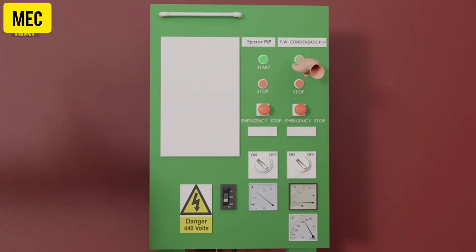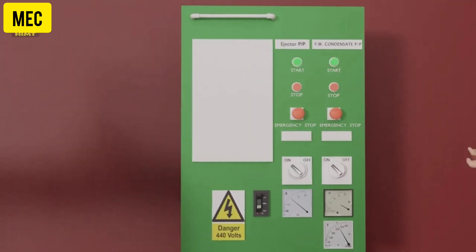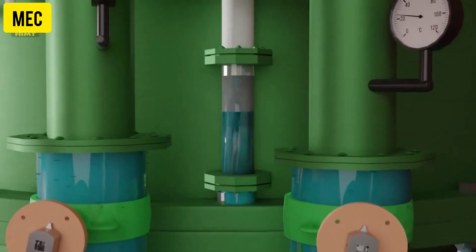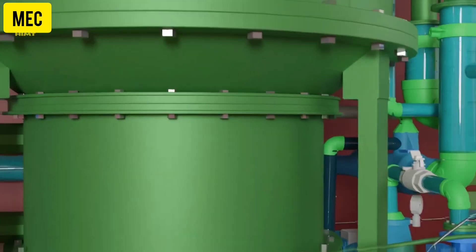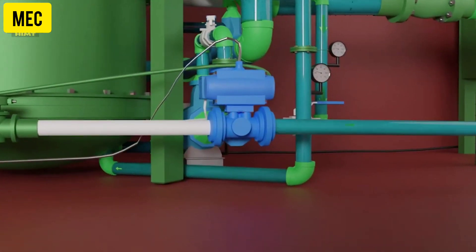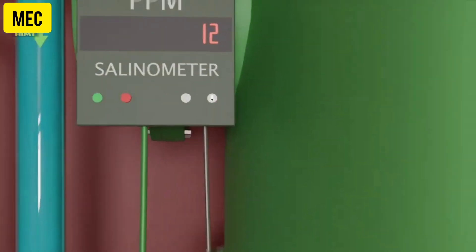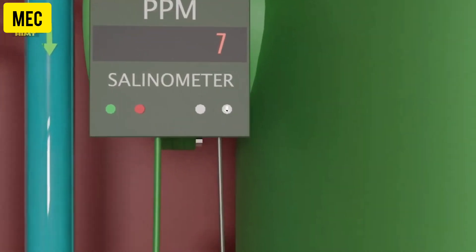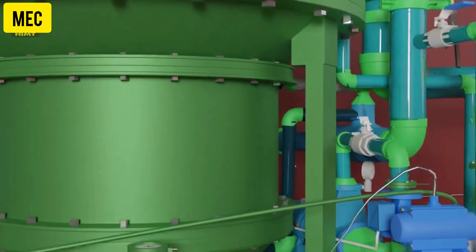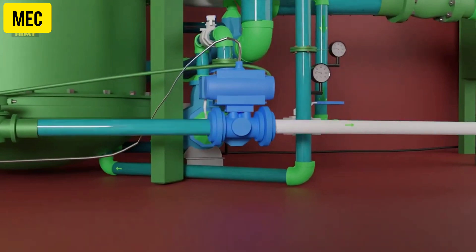Now regulate the discharge valve of the ejector pump to maintain the water level at half of the gauge glass. After that, observe the salinometer reading which is set to give an alarm when the salinity of the distillate exceeds 10 ppm. When the salinity is more than 10 ppm, the three-way valve transfers the distillate either to bilge well or back to the freshwater generator shell. When the salinity drops to less than 10 ppm, the three-way valve transfers the distillate to freshwater storage tank.